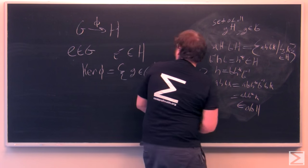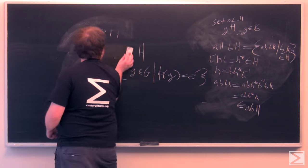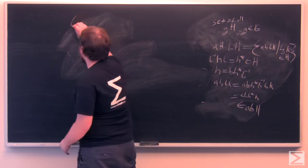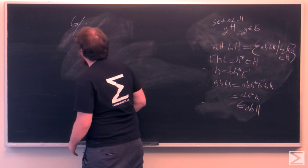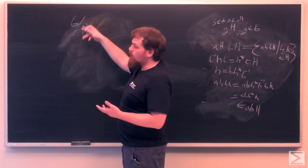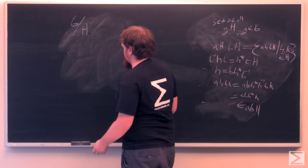And this group is written as the quotient group G mod H, where the over line is pronounced as mod.